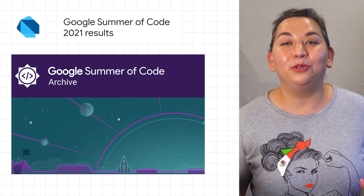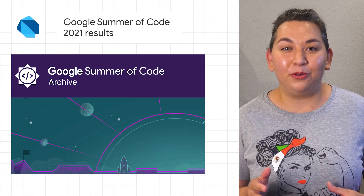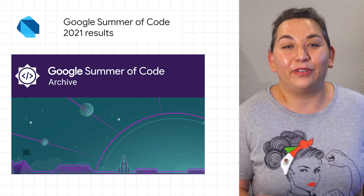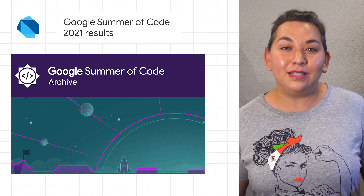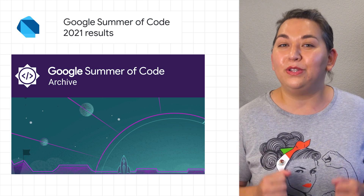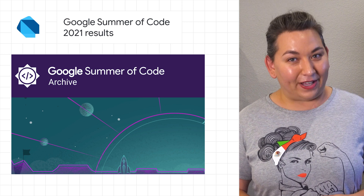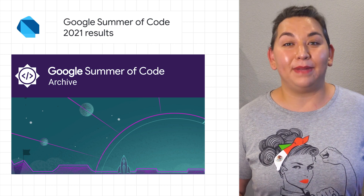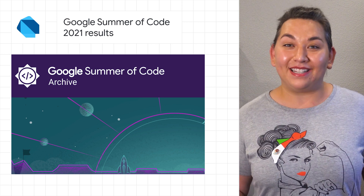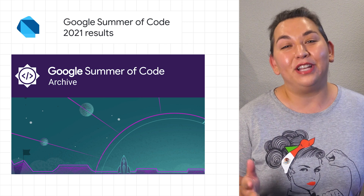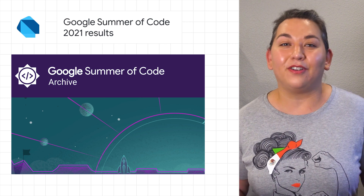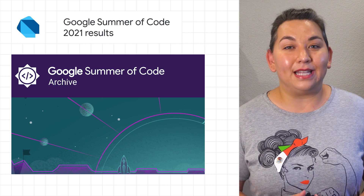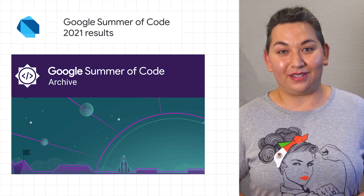The winners of Google Summer of Code 2021 were announced. Google Summer of Code is a global program focused on bringing student developers into open source software development. Congratulations to the winners and participants for all their work. Check out the winning submissions and their project repos in the blog post.